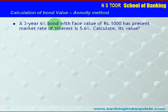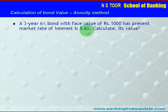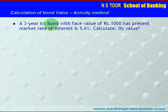This is our case: a 3-year, 6% bond with a face value of Rs. 1000, and the present market interest rate is 5.6%. A bank purchased a bond with 3-year maturity, a 6% coupon rate, at face value of Rs. 1000, and the present interest rate in the market is 5.6%.